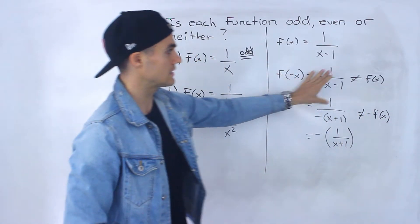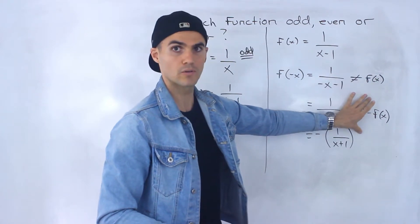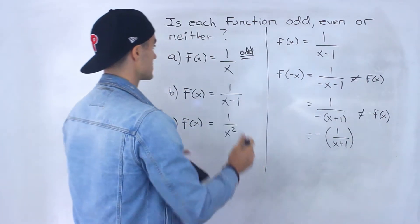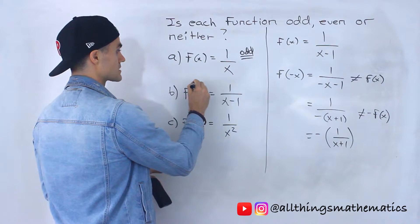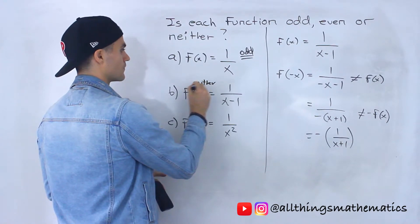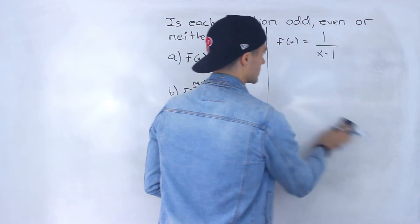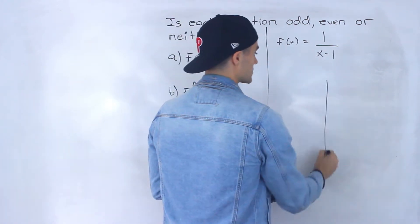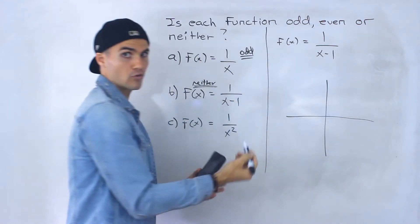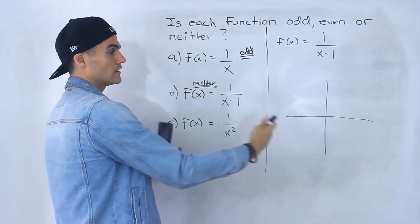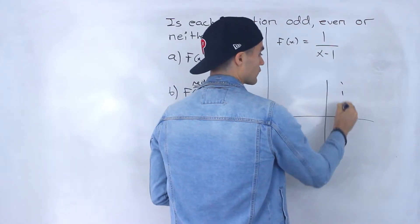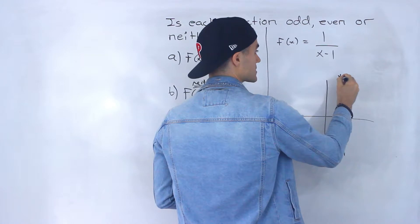Right? So because it doesn't equal f of x, or it doesn't equal negative f of x, it means that this function here is neither. And you can tell if you graph this, what's this graph going to look like? Well, it's just going to be that parent function 1 over x, shifted by 1 to the right. So there's going to be a vertical asymptote here at x equals 1. Like that.